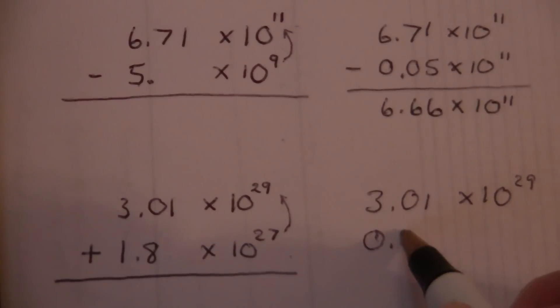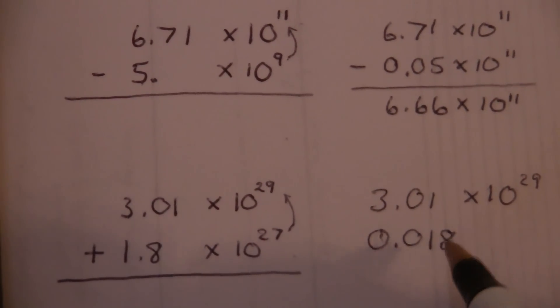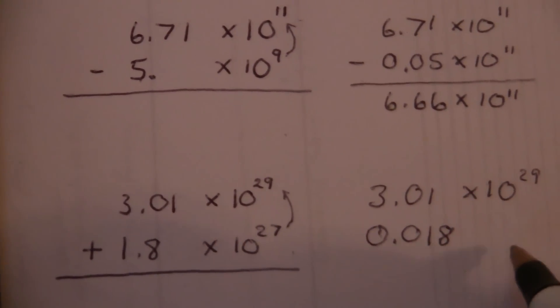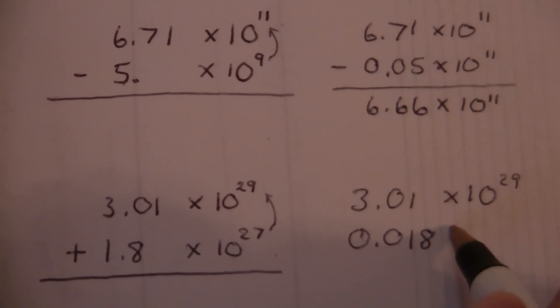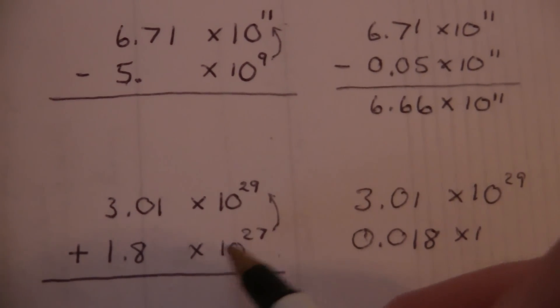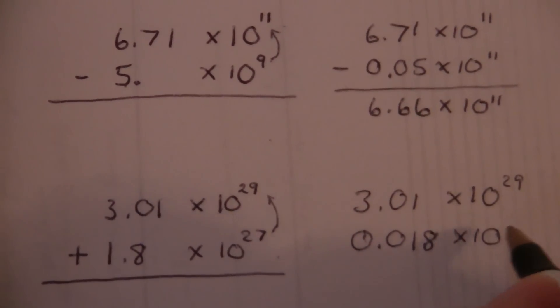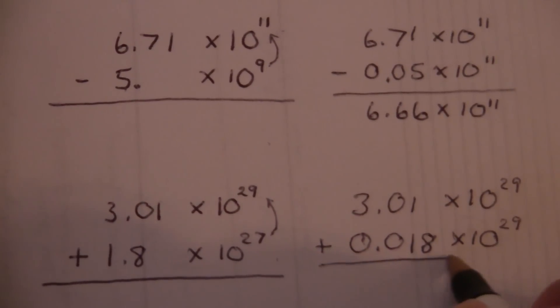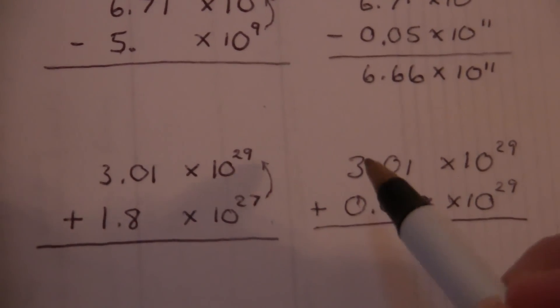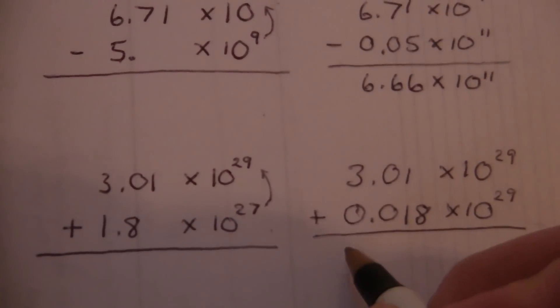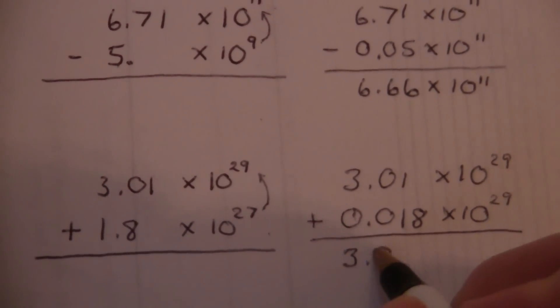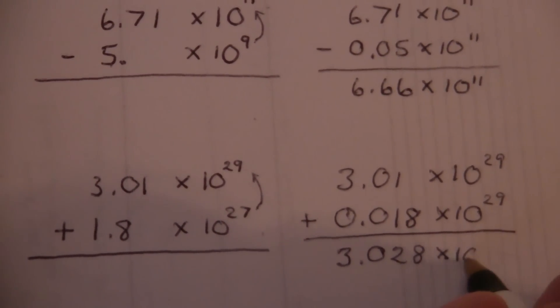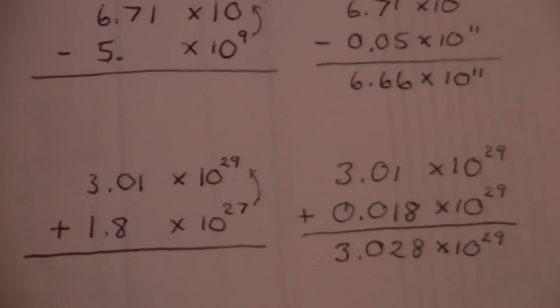So now it'll be 0.018, so we moved it 2 places further back, so that it'll take 29 places to the right to get to that same place. Now we can add these, and this is the proper alignment of the decimals, and so we actually have 3.028 times 10 to the 29th.